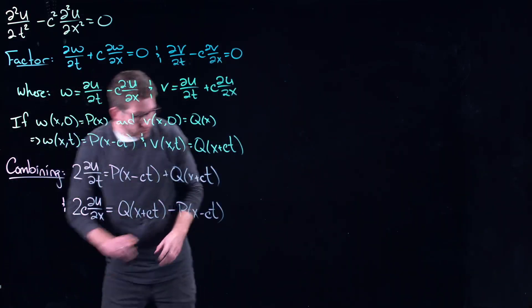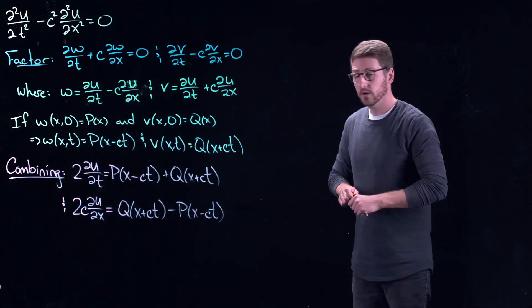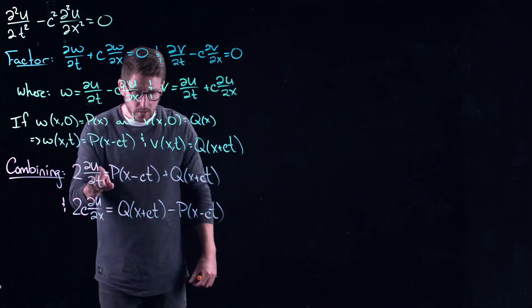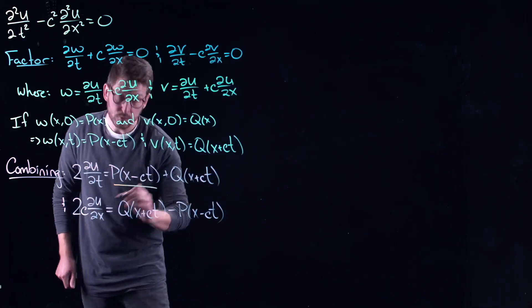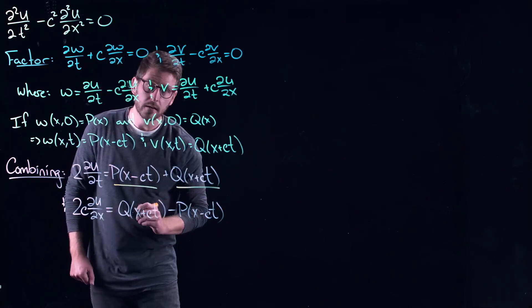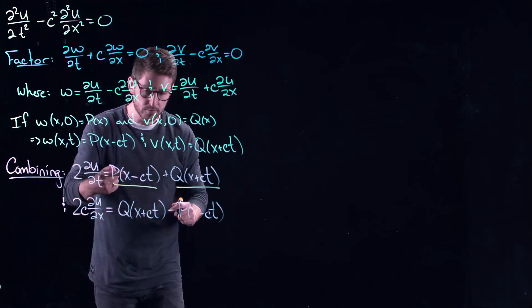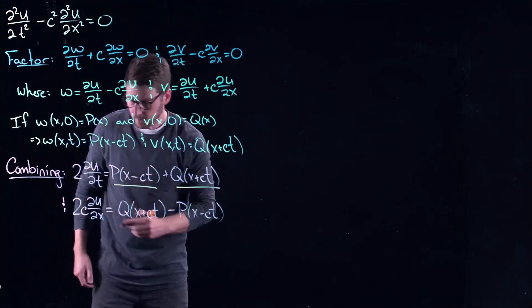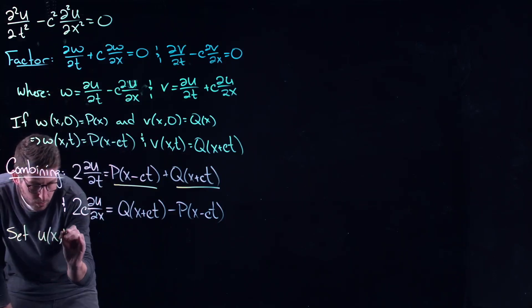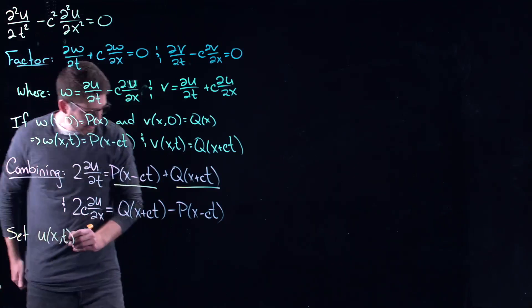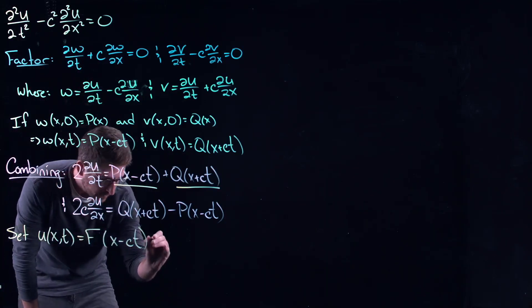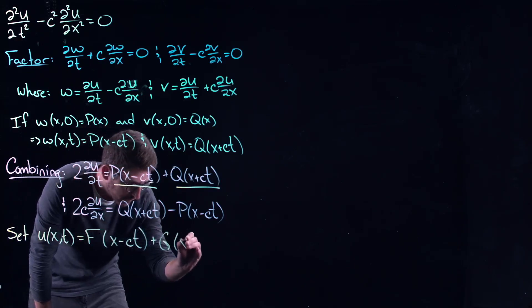So essentially, what we could conjecture here is that my solution u is made up of a rightward traveling wave and a leftward wave. This is rightward progression. This is leftward progression. So what I could do is set u, the original solution to the wave equation, as some function that's moving rightward and some function that's moving leftward.